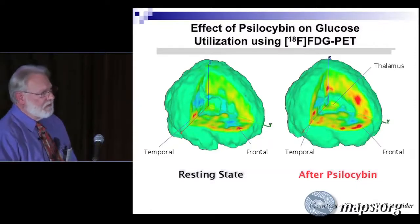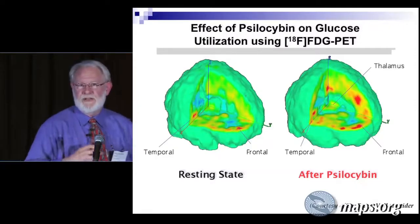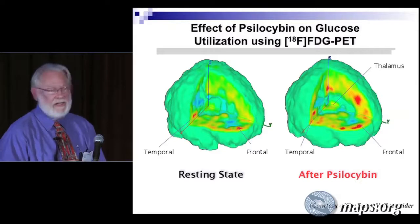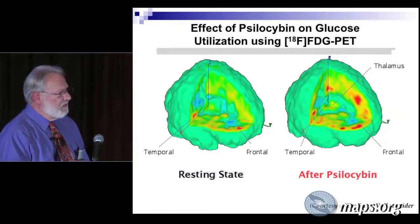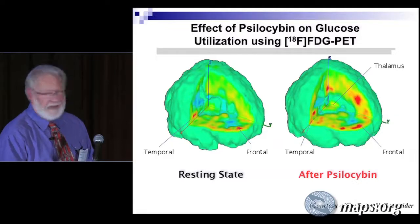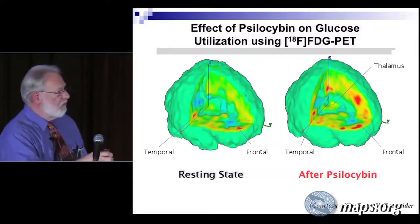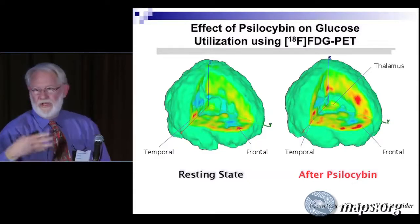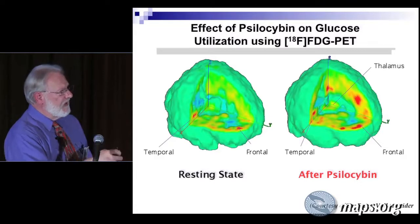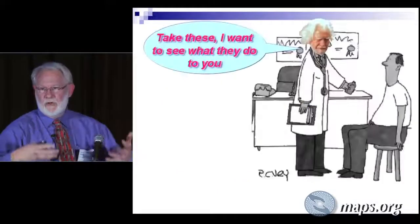Franz Vollenweider has done a lot of cutting-edge brain scanning and is really the world's top researcher in this field. In a PET scan comparison, the resting state brain versus after psilocybin shows activation of the prefrontal cortex — increased redness indicating we're turning on the cortex.